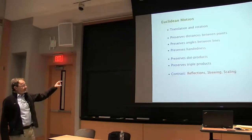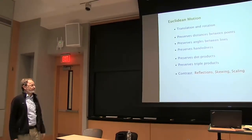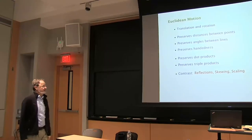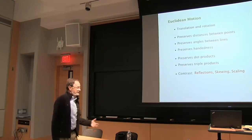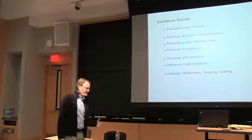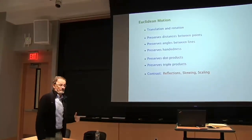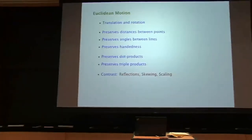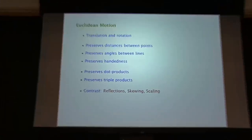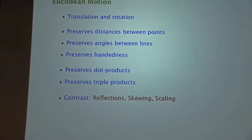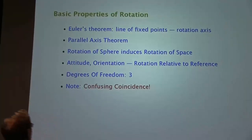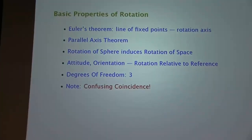Together, these mean that we preserve dot products and triple products, and we're leaving out transformations of free space that would otherwise be perfectly reasonable, such as reflections, skewing, and scaling. We'll talk a little about scaling, but mostly leave it out. So, rotations. First, Euler's theorem: any rotation of a rigid object has the property that there is a line that is not changed — that's the axis.